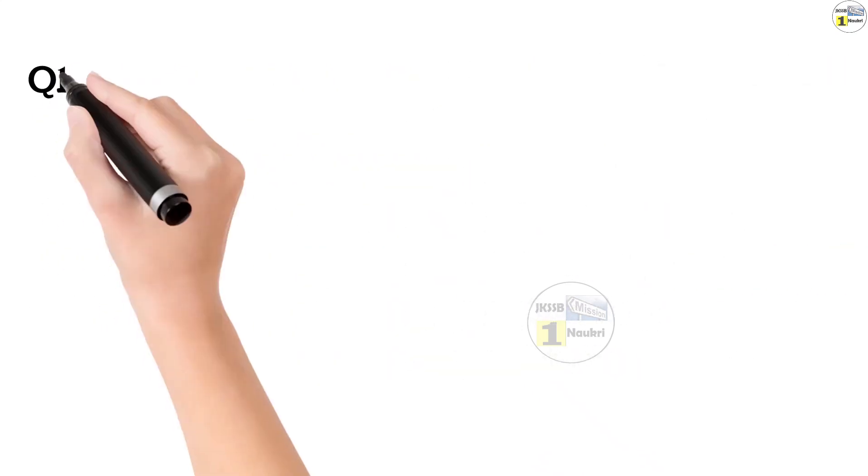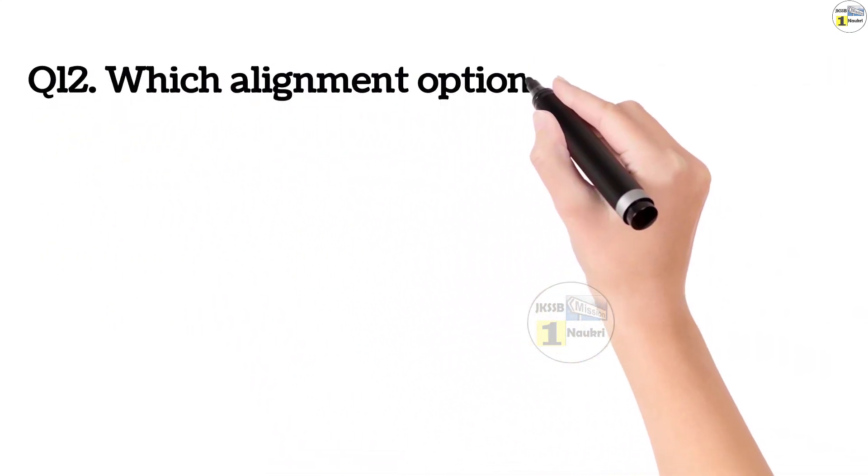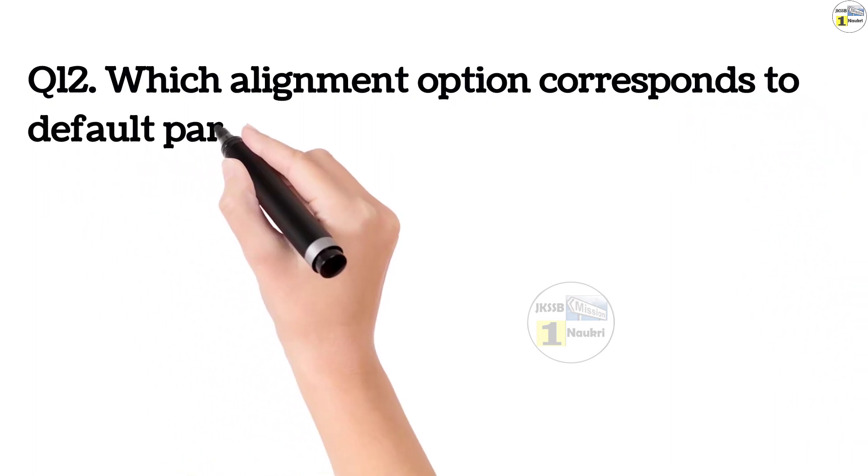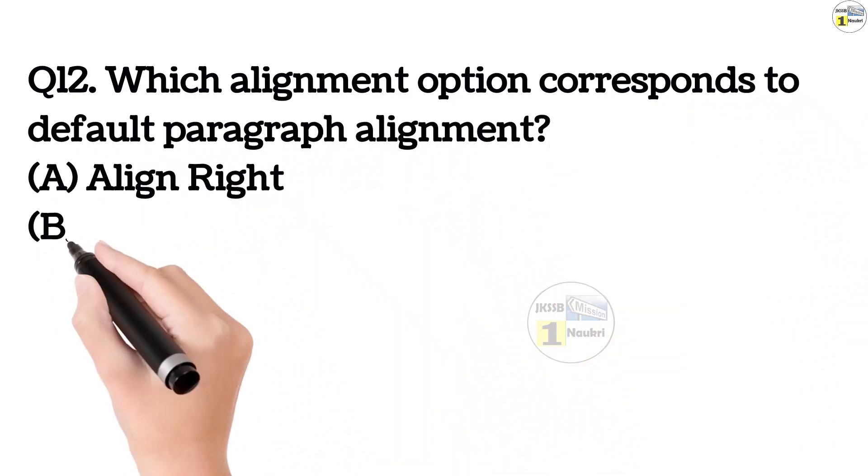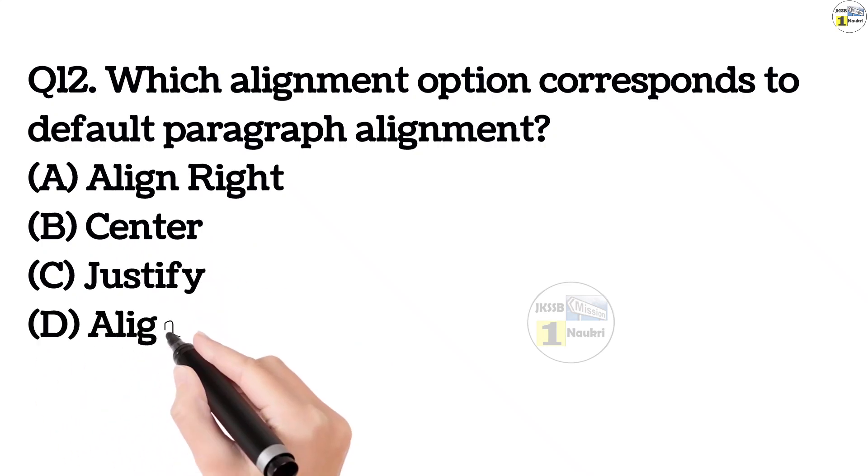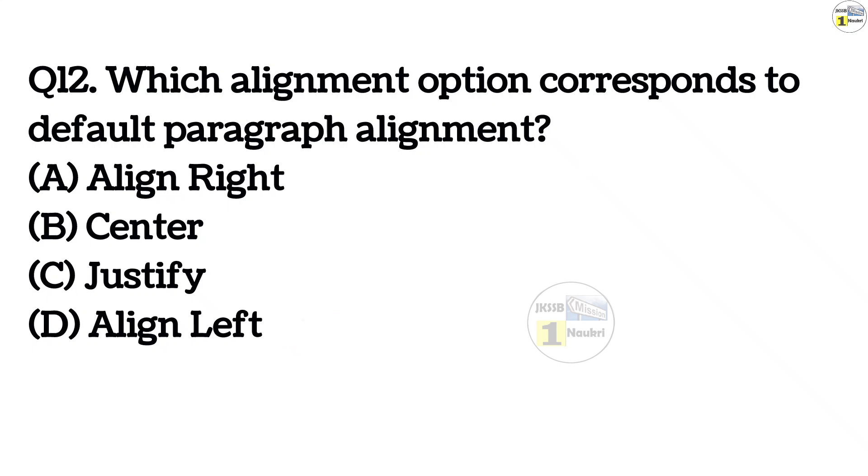Question number 12. Which alignment option corresponds to default paragraph alignment? Option A, align right. Option B, center. Option C, justify. Option D, align left. The right answer is align left. When we write a paragraph in Microsoft Word, the default setting is left alignment.